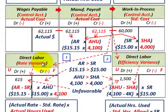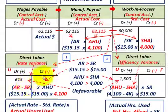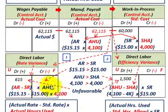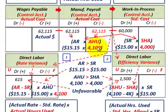So that's our direct labor rate variance — just remember, it's the actual rate per hour less the standard rate per hour times the actual hours used for the project or for the month.